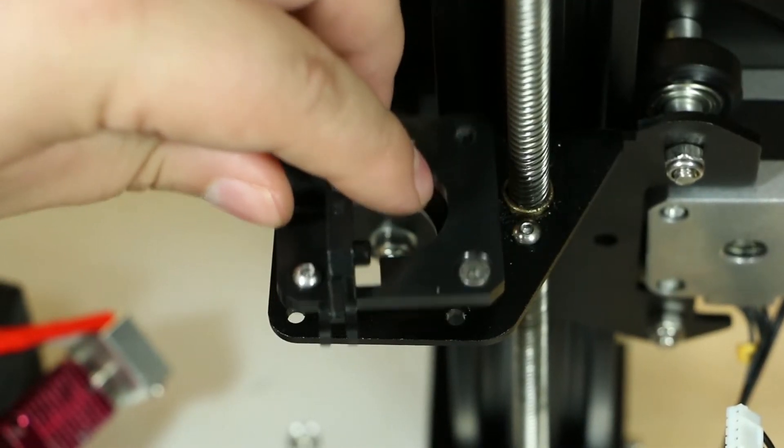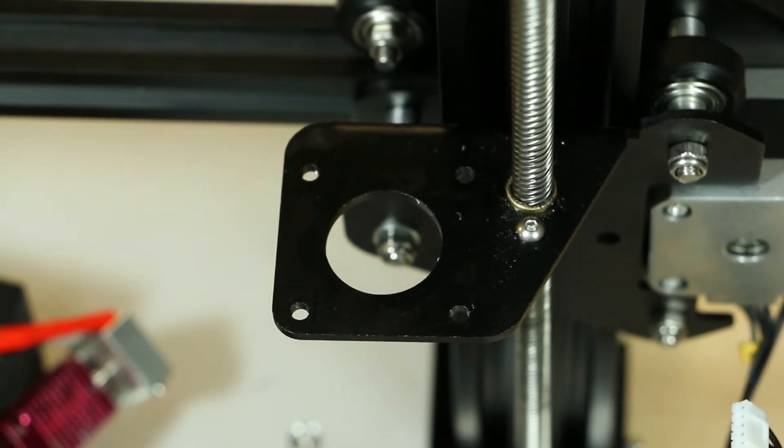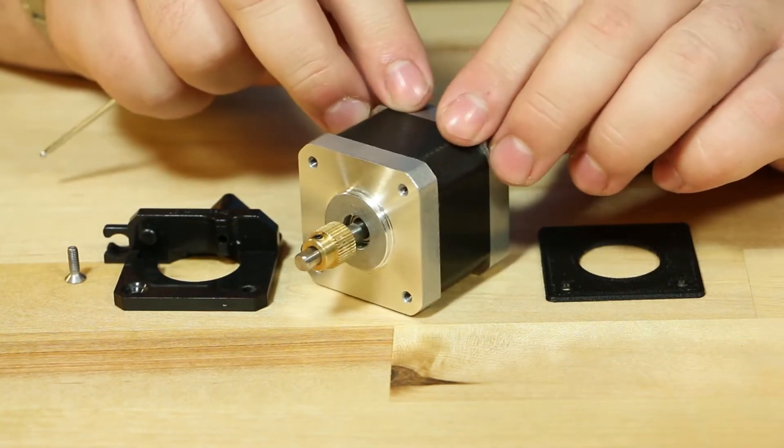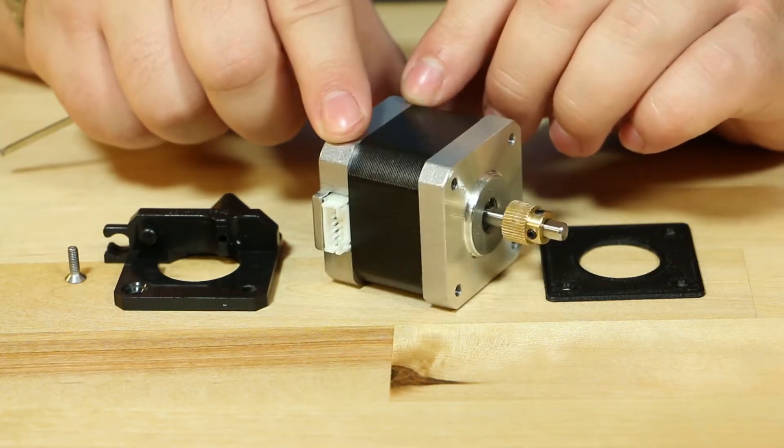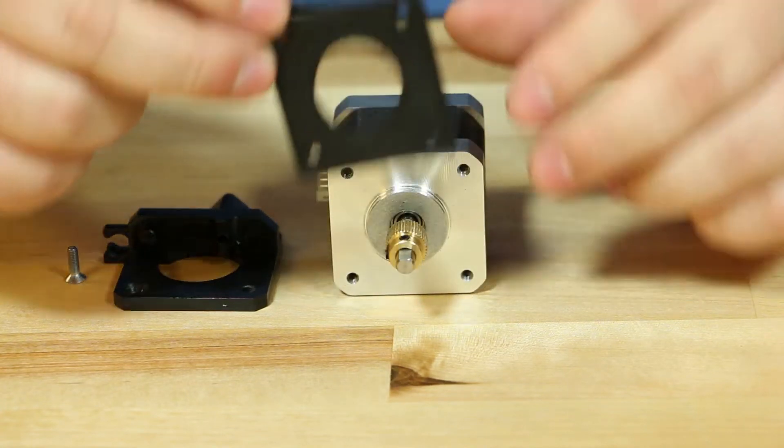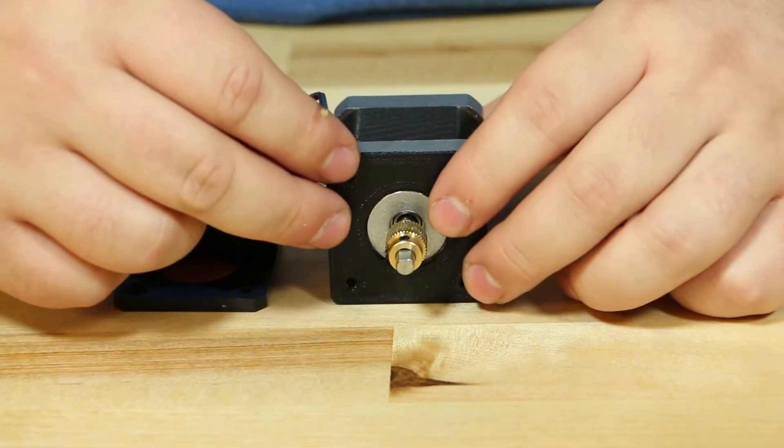Now, release the extruder mount from its perch. Make sure to set the screws aside. Once the stepper motor is free, make sure to place the cable side of the motor onto your left. Once the stepper motor is set correctly, place on the spacer. Make sure it lines up correctly.